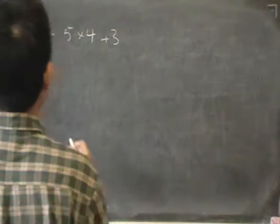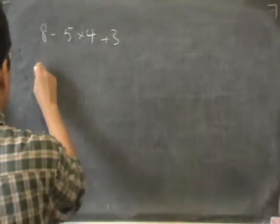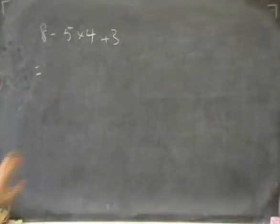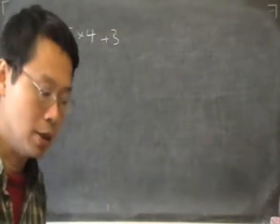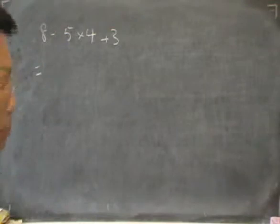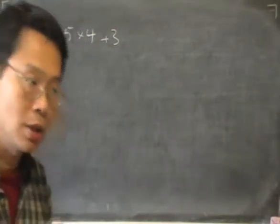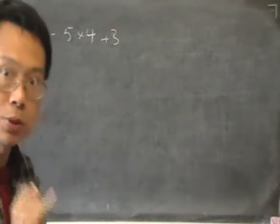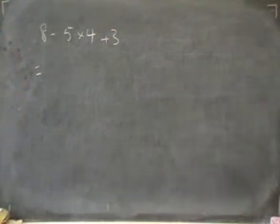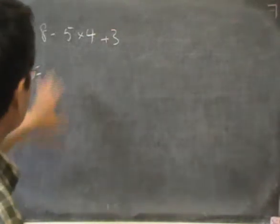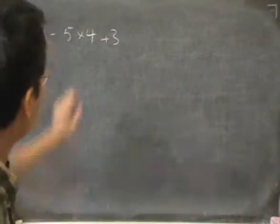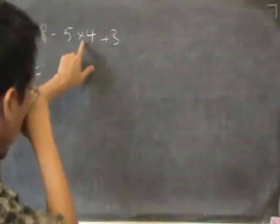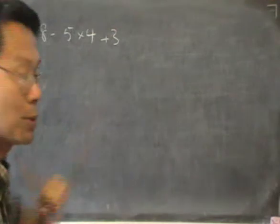The way to do this is that we have the operations minus, times, and plus. The rule is that we must always do the times and divide first before we do the plus and the minus. So this means we must not do the 8 minus 5 first. We must go straight to the times and do the 5 times 4 first.